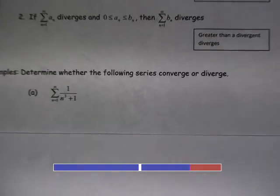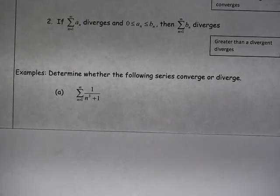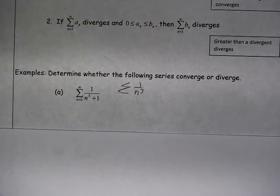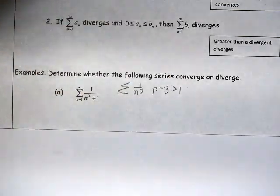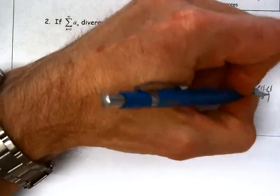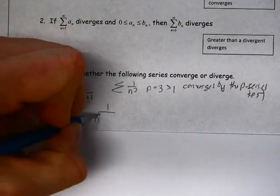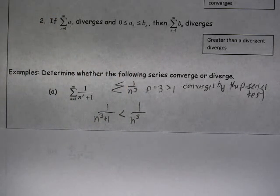The first example we'll look at is whether the series 1 over (n cubed plus 1) converges or diverges. I'll compare that to 1 over n cubed. I know that 1 over n cubed converges by the p-series test — p is 3 here, which is greater than 1, so this series converges. And because I'm adding 1 to the denominator, 1 over (n cubed plus 1) is always going to be less than 1 over n cubed.